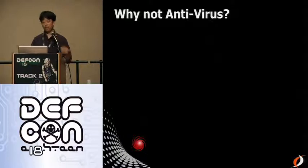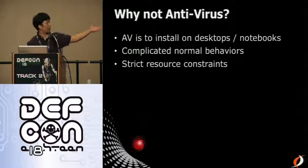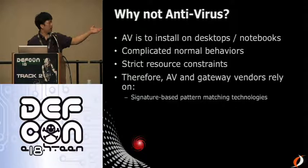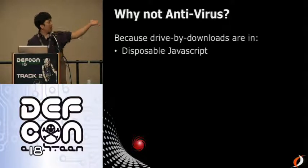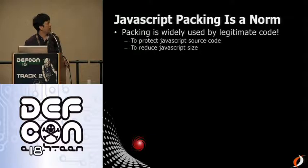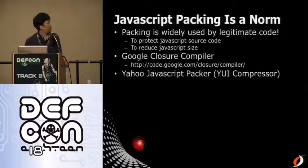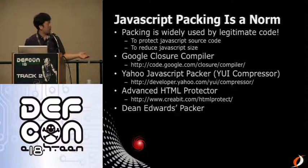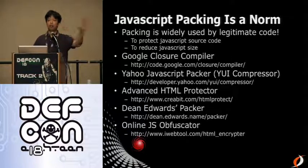Conclusion — why is it so hard for antivirus? Antivirus is designed for desktops and notebooks with complicated behaviors and strict resource constraints, so AVs and gateway vendors rely on lightweight, signature-based technology. But JavaScript drive-by-downloads are disposable — generated every time they're served. Disposable PDF scripts, disposable ECMA scripts. JavaScript packing is the norm, so you can't flag every packed JavaScript as malicious because legitimate sites like Google and Yahoo use JavaScript packers too. It's very hard to use heuristics and say packed JavaScript equals malicious JavaScript.